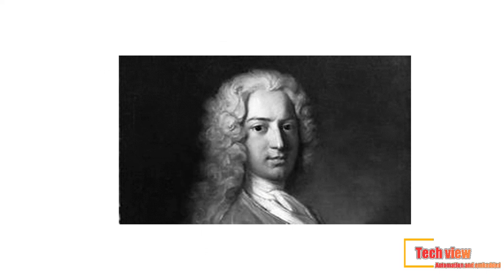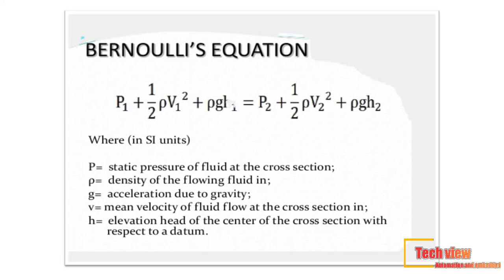Bernoulli's equation states that the pressure drop across the constriction is proportional to the square of the flow rate. Using this relationship, 10% of full-scale flow produces only 1% of the full-scale differential pressure. At 10% of full-scale flow, the differential pressure flow meter accuracy is dependent upon the transmitter being accurate over a 100:1 range of differential pressure. Differential pressure transmitter accuracy is typically degraded at low differential pressures, so flow meter accuracy can be similarly degraded. This nonlinear relationship can have a detrimental effect on the accuracy and turndown of differential pressure flow meters. What matters is the accuracy of the flow measurement system, not the accuracy of the differential pressure transmitter.